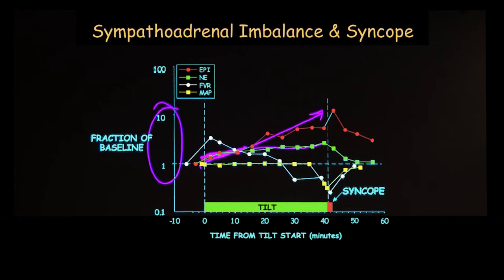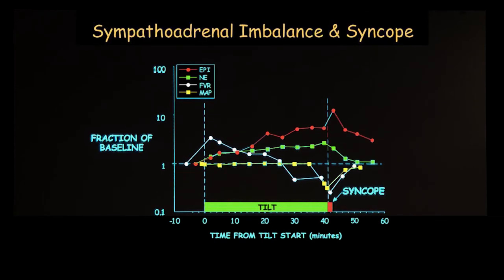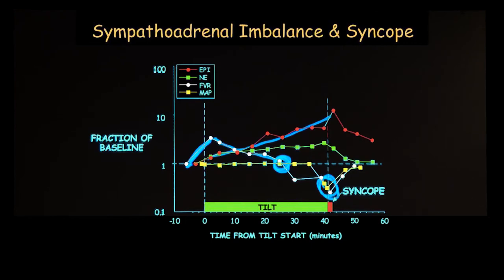This happens long before there's actually a fall in blood pressure. The patient faints because of stimulation of beta-2 receptors in skeletal muscle by adrenaline, causing forearm vascular resistance to fall. At first forearm vascular resistance goes up as expected, but as adrenaline builds up it starts going down, and when it goes below baseline, that means a fainting reaction is coming. The blood pressure then plummets several minutes after — that's sympatho-adrenal imbalance.